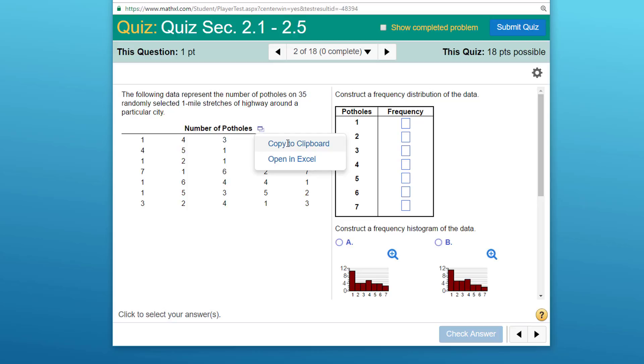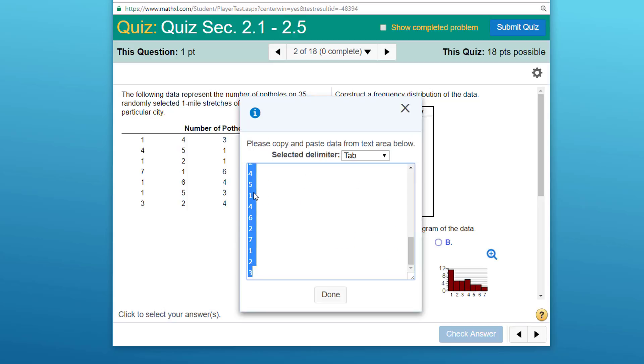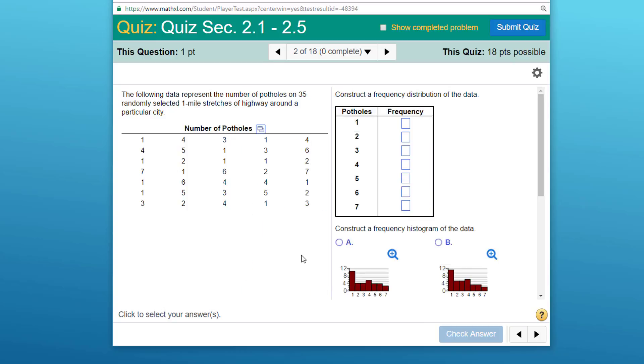Then you can again use the clipboard. Show you one more time: highlight it in blue, right-click on it and copy, click done, and you can paste it into your StatCrunch that's open on StatCrunch.com.